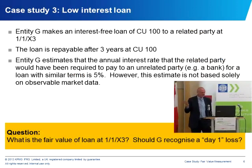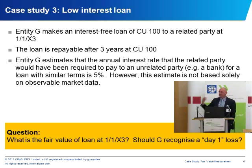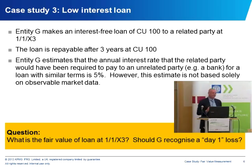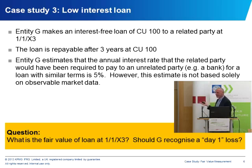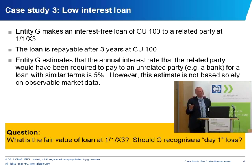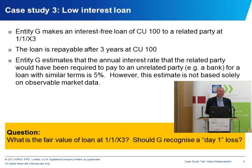Scenario three also deals with day one gains and losses. A company makes an interest-free loan of 100 to a related party for three years. The company believes the market rate of interest on such a loan would be 5% per year, but that rate is not fully backed by observable market data — there are unobservable factors like credit risk or liquidity risk. Discounting a three-year interest-free loan of 100 at 5% gives a present value of 86. So what is the fair value of the loan, and would the lender recognise a day one loss, given that the 5% rate is not fully observable?